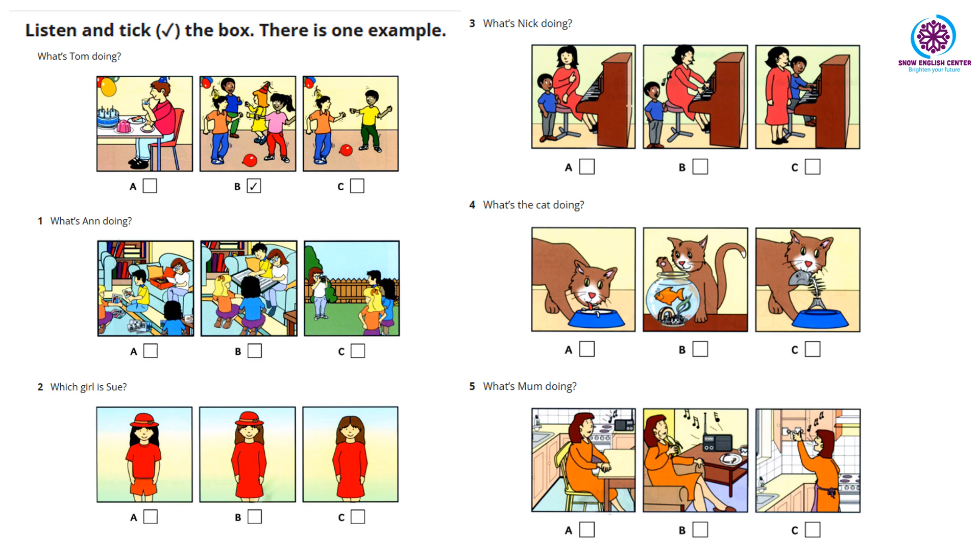What's Tom doing? Is Tom sitting on a chair? No, he isn't. Ben is sitting on a chair. Tom's dancing. Is he dancing with his friends? Yes, he's dancing with three friends. Can you see the tick? Now you listen and tick the box.